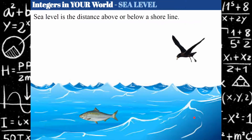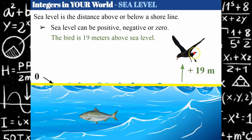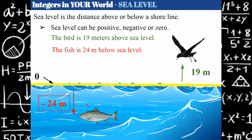More integers in your world — let's talk about sea level. We have the ocean here and sea level is the distance above or below a shoreline. Our shoreline represents zero. So this bird is 19 meters above sea level and the fish is 24 meters below sea level. You could use the word below — notice there's no negative sign because it's denoted with a word. Or you could mark the diagram with negative 24 meters showing that it is below zero meters. The bird has no negative sign, so we know it's above the shoreline by 19 meters.